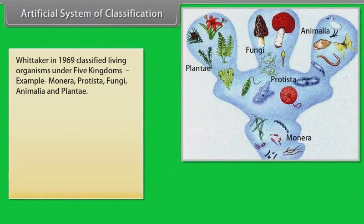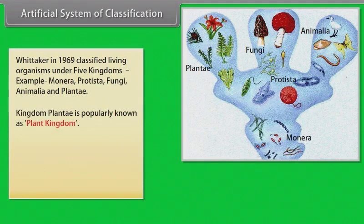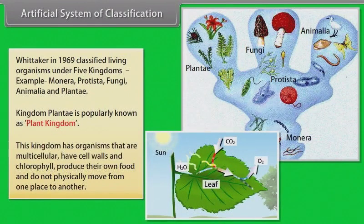Whittaker in 1969 classified living organisms under five kingdoms: Monera, Protista, Fungi, Animalia, and Plantae. Kingdom Plantae is popularly known as Plant Kingdom. This kingdom has organisms that are multicellular, have cell walls and chlorophyll, produce their own food, and do not physically move from one place to another.